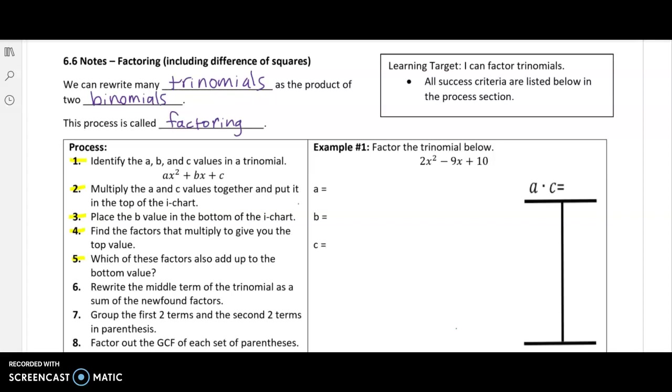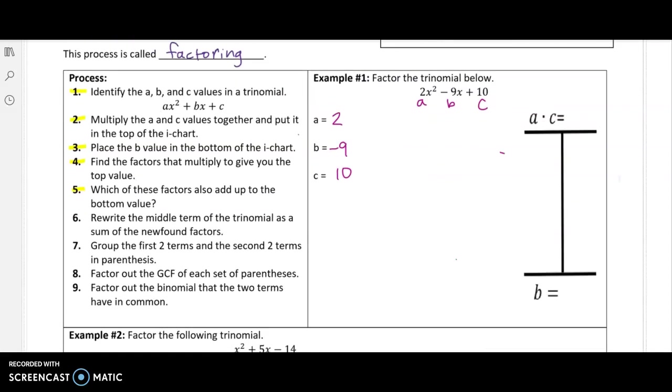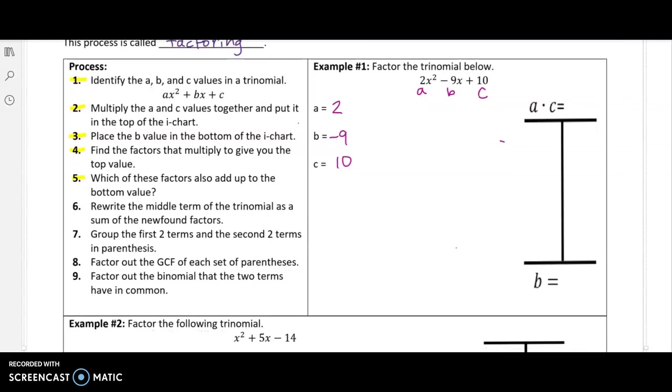Same process for the beginning. Identify your a value, which is the coefficient of x squared, the b value, which is the coefficient of your x term, and your c value, which is your constant. From there, we multiply the a and the c value and fill in our i chart. Remember, our i chart is to help us come up with all of the factors of a times c. A times c is 20.